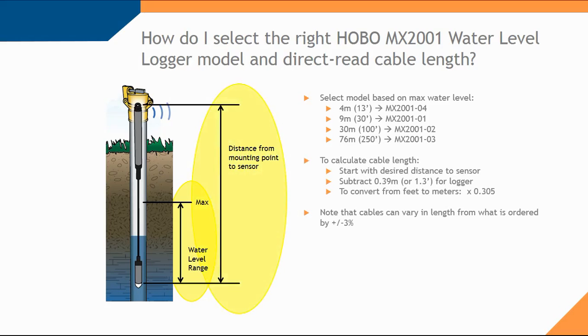To calculate that cable length, start with the desired distance to the sensor. You want to subtract 0.39 meters for the logger portion. Custom cable lengths could vary a bit from the ideal. We try to get them as close as possible. Typical variance is between 1 and 3 percent.